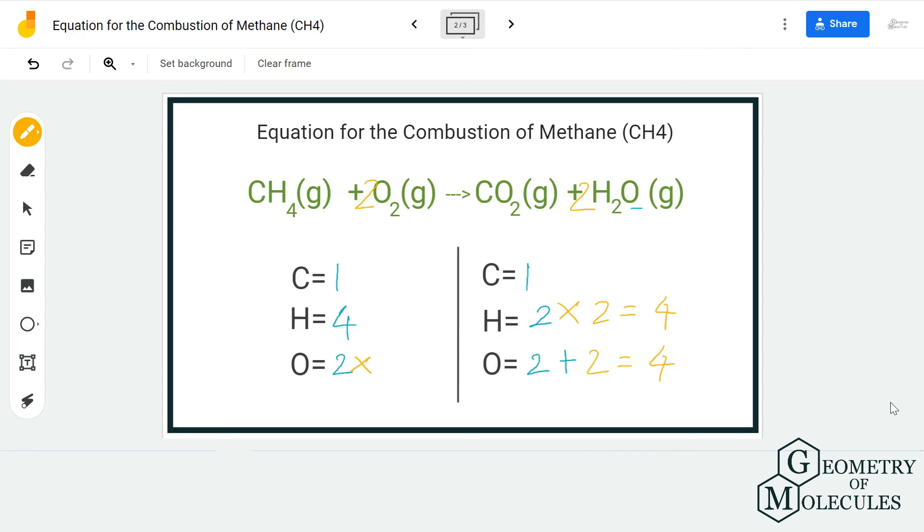Now I have four oxygen atoms on the reactant side as well. This is a balanced equation for the combustion of methane: we have one carbon atom on both sides, four hydrogen atoms, and four oxygen atoms.